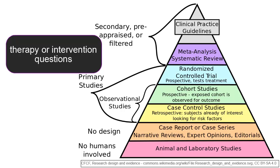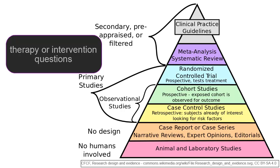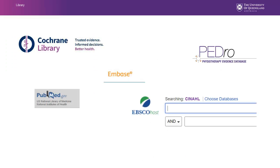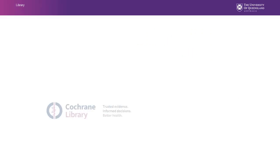A number of databases are available to assist you in searching for the literature, for example PubMed and Embase. If the search for published literature proves unsuccessful, move down the hierarchy of evidence until you find some useful sources. A word of caution: the lower down the hierarchy you go, the less reliable the evidence is likely to be. Our next videos will demonstrate searching for evidence in traditional and specialized databases, including PubMed, Embase, CINAHL, Cochrane, and PEDro.